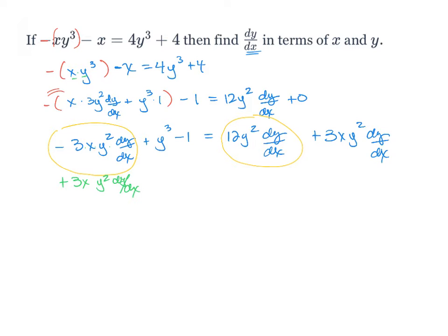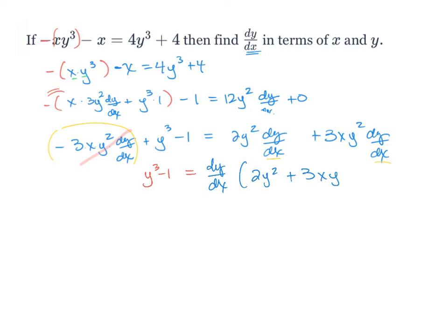All right, so once I've done that, I'll clean this up a little. Now if you notice, this is gone because we subtracted it from both sides. So all I have on this side is y³ minus 1, and on this side I'm going to factor out the dy/dx. Since it's in both terms, I can pull that out, leaving 12y² plus 3xy².